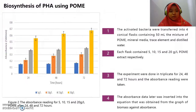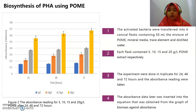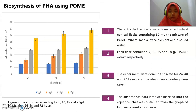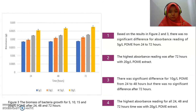This is the graph of absorbance readings for 5, 10, 15, and 20 gram per litre POME after 24, 48, and 72 hours. The activated bacteria were transferred into 4 conical flasks containing 50mN mixture of POME, mineral media, trace elements, and stick water. Each flask contained 5, 10, 15, and 20 gram per litre POME extract respectively. The experiment was then incubated for 24, 48, and 72 hours and absorbance readings were taken. The absorbance data was later inserted into the equation obtained from the graph of biomass against absorbance.